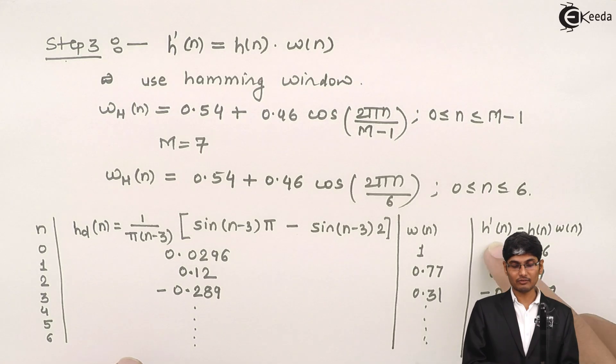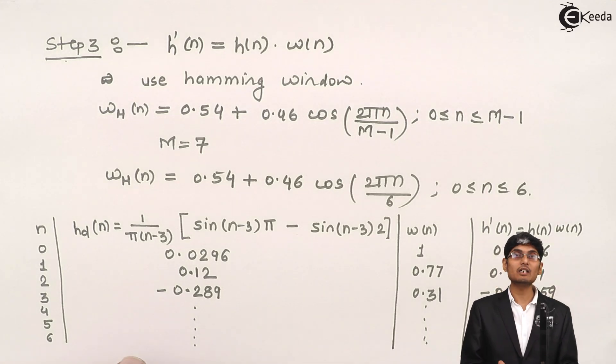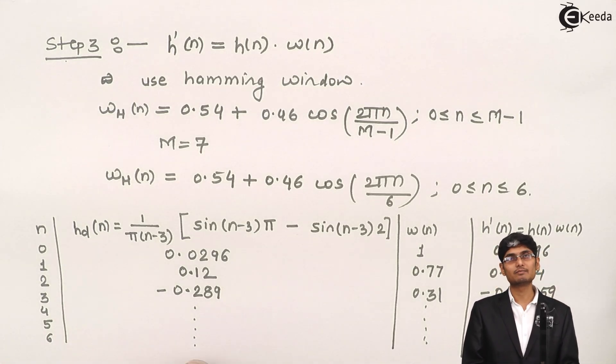So h'(n) will finally be a finite sequence with 7 numbers. Thank you.